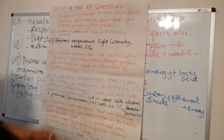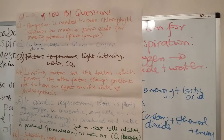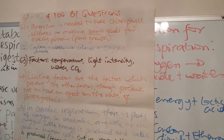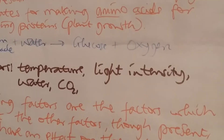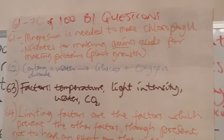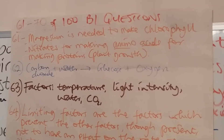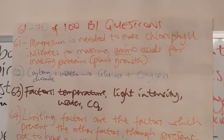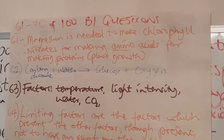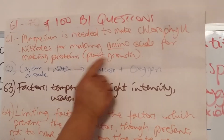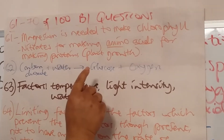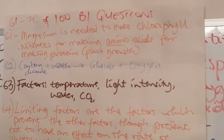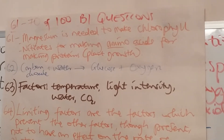Question 61 asks: what is the importance of magnesium and nitrates to plants? Magnesium is needed to make chlorophyll, and nitrate is useful for making amino acids. Amino acids are required for making proteins, and proteins help plants to grow. Chlorophyll is present in leaves and is important for trapping sunlight for photosynthesis.